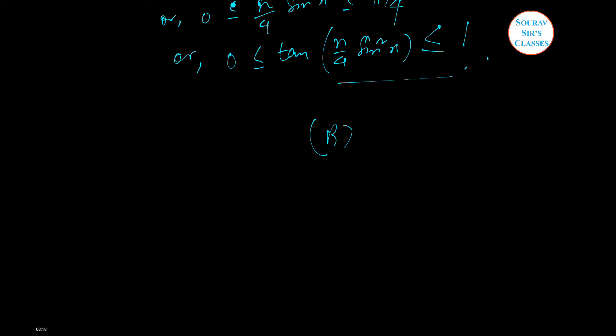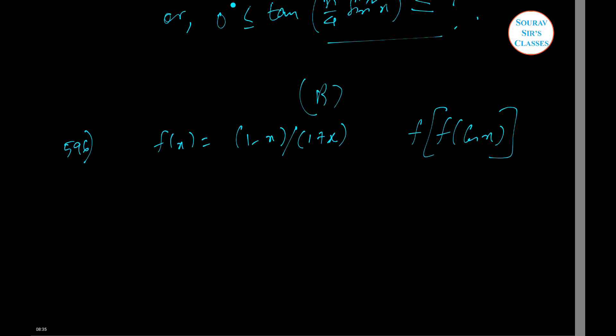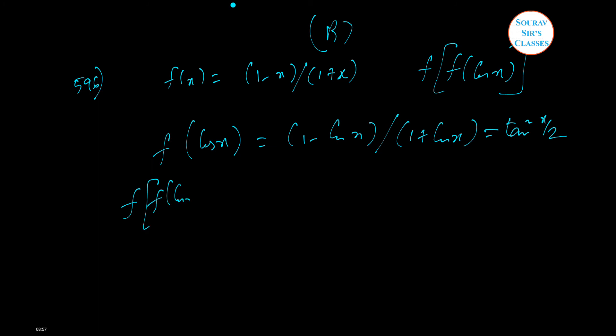Next I'm doing a similar question, it's 596. If f of X equal to 1 minus X by 1 plus X, then find f of f of cos X. Very simple question. First we need to find f of cos X, that is 1 minus cos X by 1 plus cos X. This is tan square X by 2. In the next step, f of f of cos X is 1 minus tan square X by 2 by 1 plus tan square X by 2. This can be ultimately written as cos X itself. Hence option B is correct.